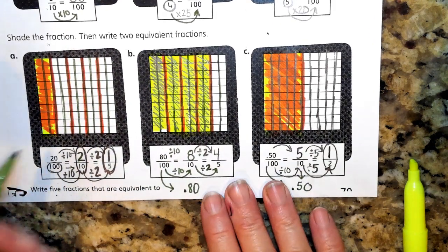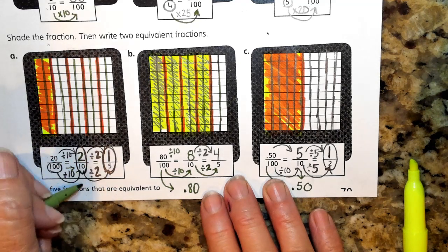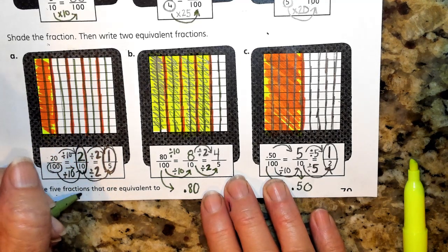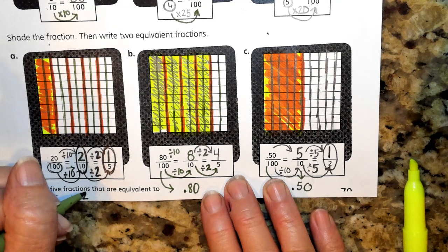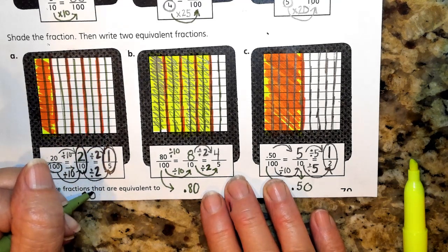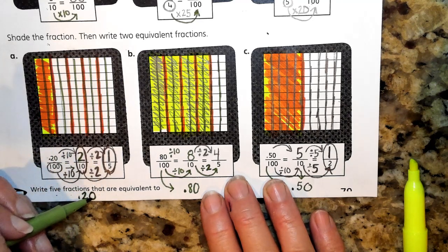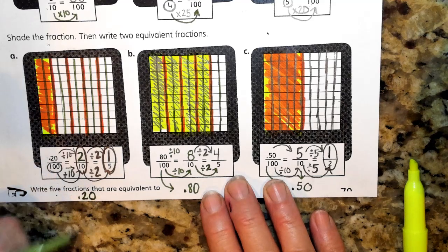And finally, if I think about 1 fifth, I can think about that as 2 tenths, because the 2 is in the tenths place, or 20 hundredths. 20 hundredths, because 20 ends in the hundredths place.